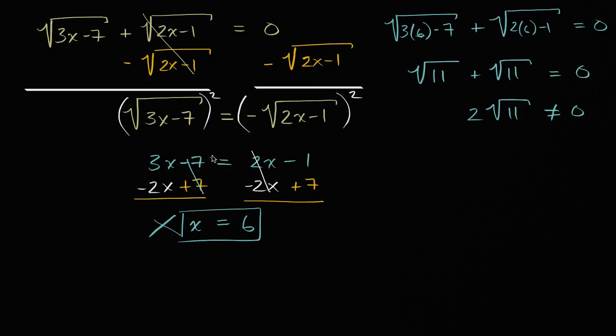And you might say, wait, how did this happen? I did all of this nice neat algebra, I didn't make any mistakes, but I got something that doesn't work. Well, this right here is an extraneous solution. Why is it an extraneous solution?